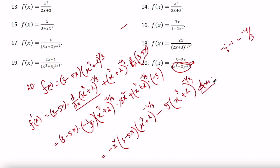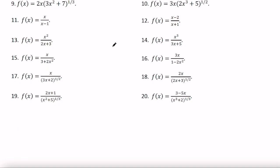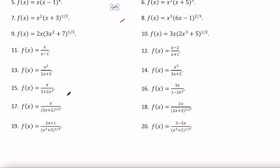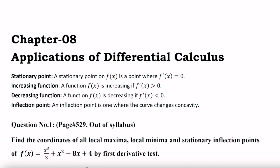You don't need to check whether the previous result and this result are the same — the two results will be exactly the same if you complete the simplification. Problems 11 to 20 are exactly the same; you can check those problems on your own. If you have any problem, write in the comment box and I will differentiate those problems in another video. In our next video I will discuss chapter 8, which is the application of differential calculus — using the derivatives you have learned to understand real life problems. Thank you very much.